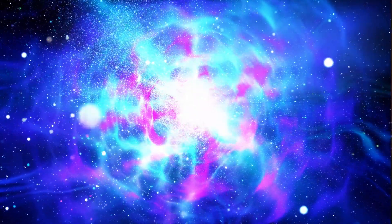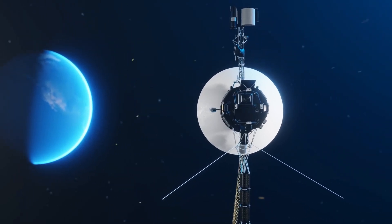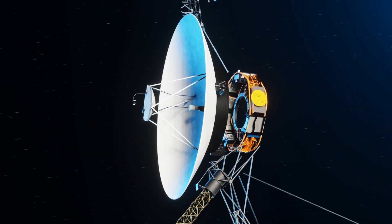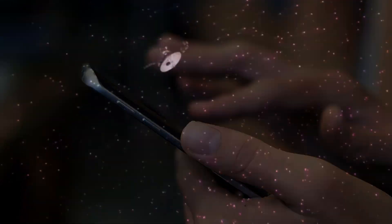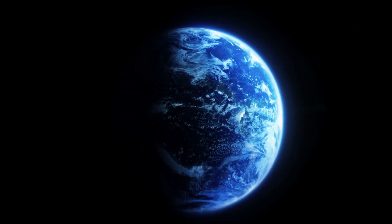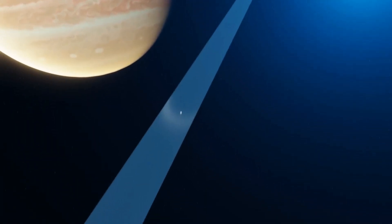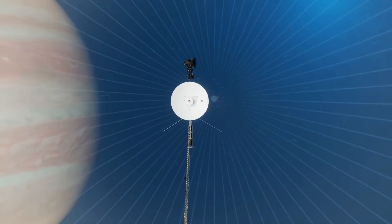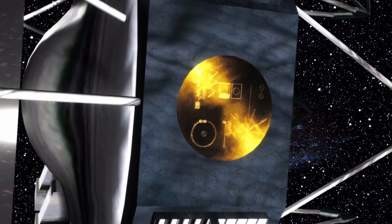The Voyager's computers can execute approximately 81,000 instructions per second. By comparison, a modern smartphone is around 712,000 times faster. Data transmission to Earth occurs at 160 bits per second, a speed so slow that downloading a 5 gigabyte movie at that rate would take roughly 8.5 years.